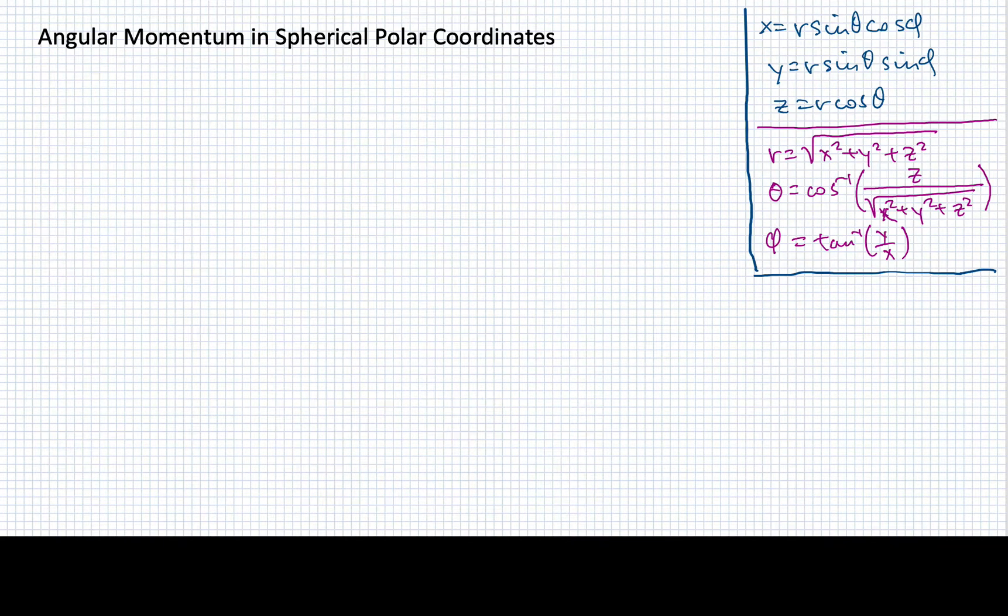Spherical polar coordinates are particularly useful for problems that have some kind of center of symmetry or spherical symmetry about them. And this makes them ideal for things like angular momentum. So what we want to do in this video is explore what the angular momentum operators look like when converted to spherical polar coordinates.